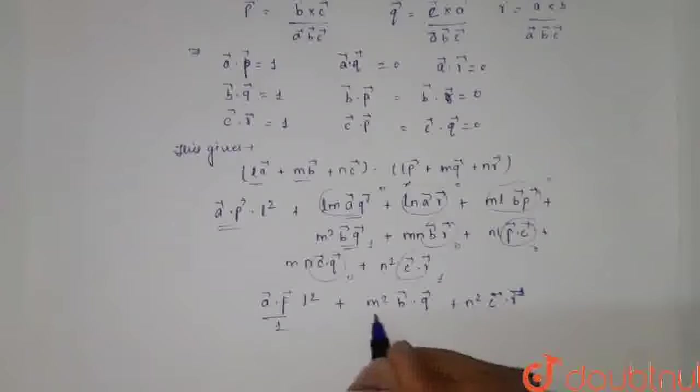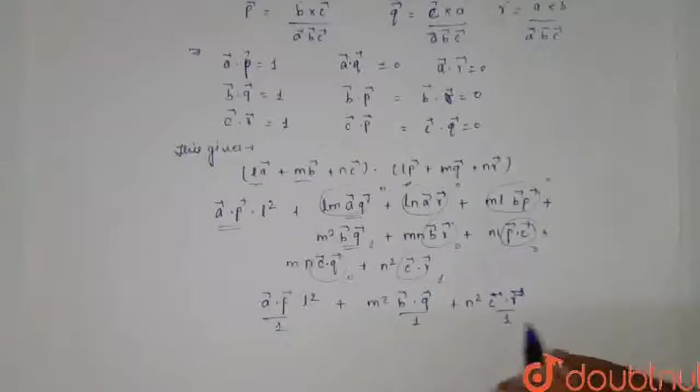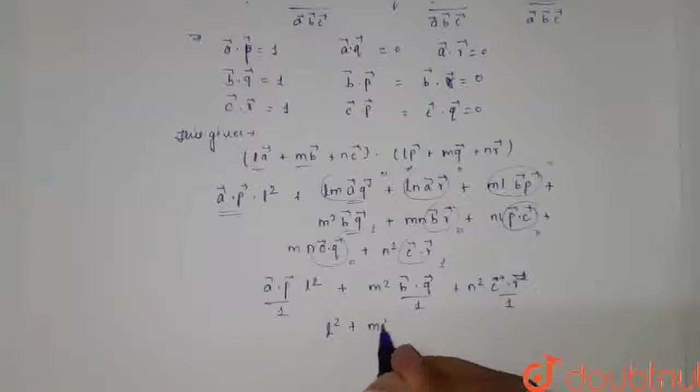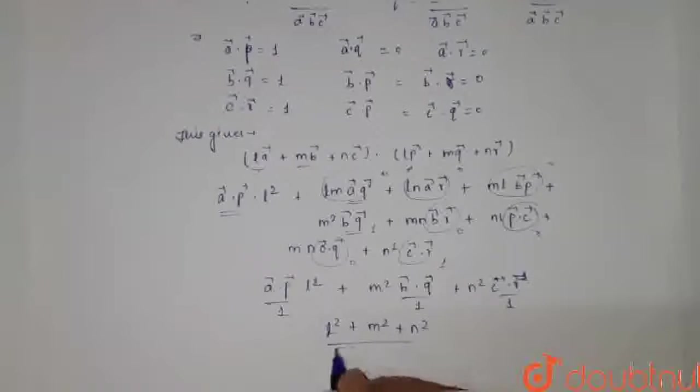Now this value is 1, this value is 1, this dot product is 1. So we are left with L square plus M square plus N square. So this is our answer which matches to option A. Thank you.